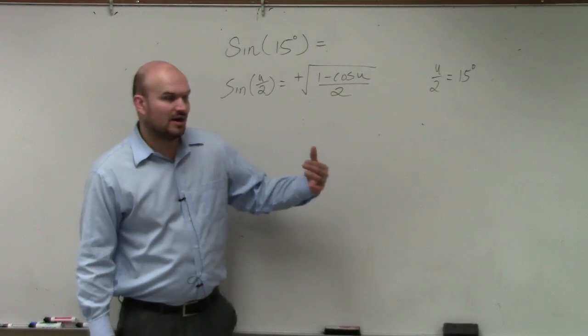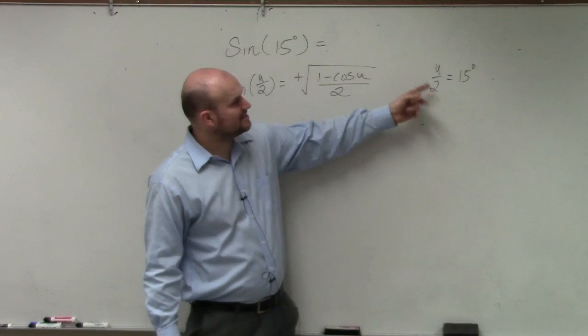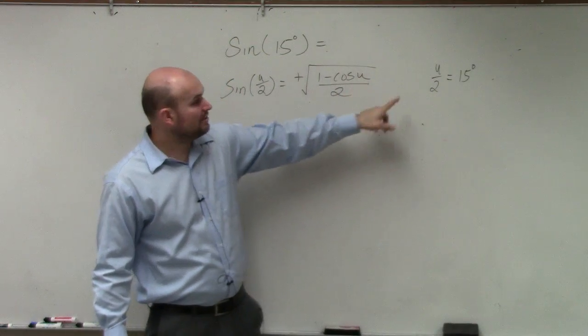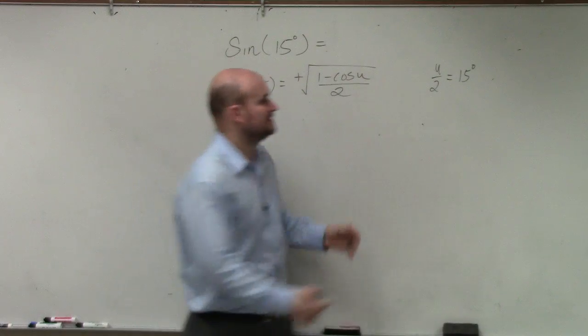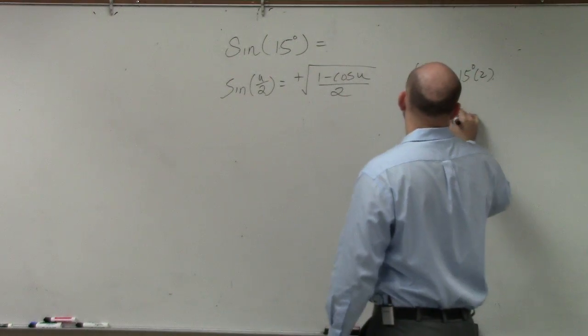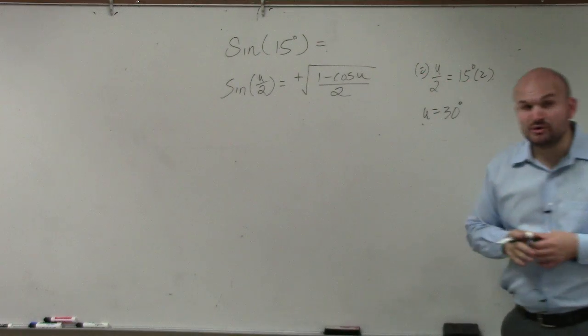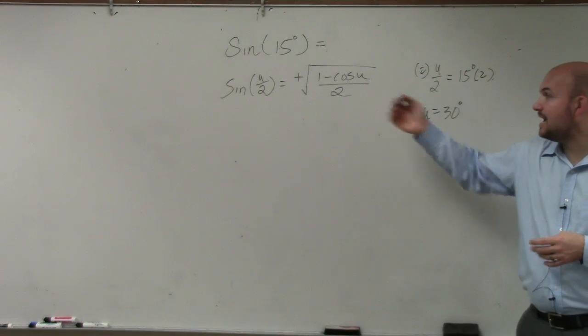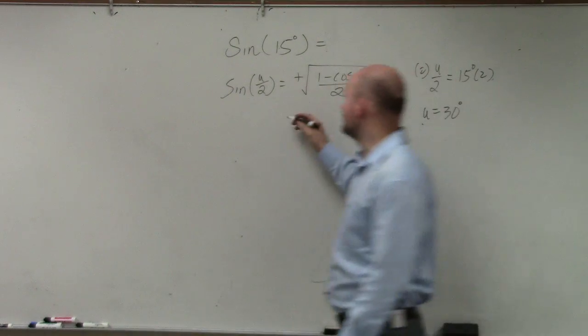Because, well, in this problem, what they're asking for is they use u. So we want to make sure we solve for u. So if we have u over 2 equals 15 degrees, then u has to equal? u equals 30 degrees. So now we simply just plug 30 degrees into this formula.